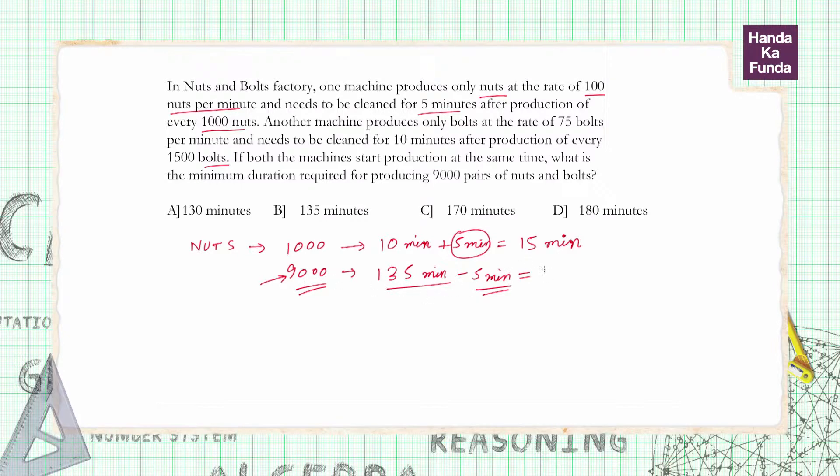It is very important to understand why I'm removing the last 5 minutes - because the last 5 minutes are for cleaning and that is not included in the production process. All other cleanings are included because we need to use the machine again.